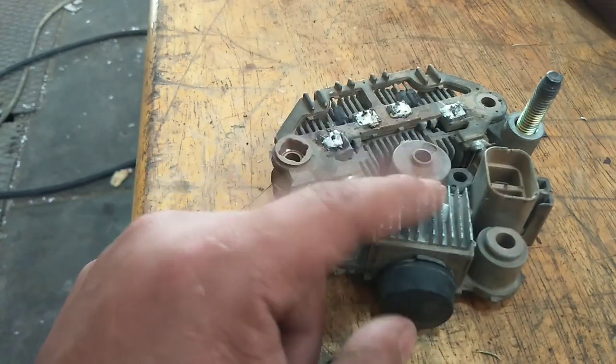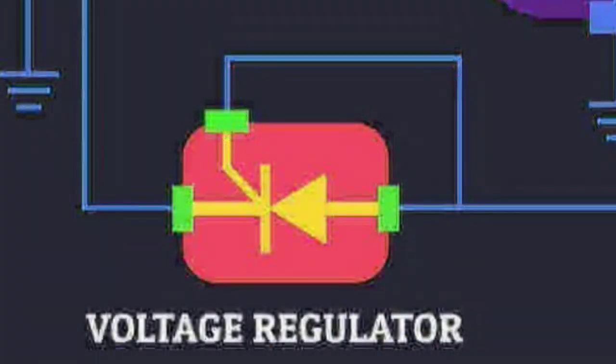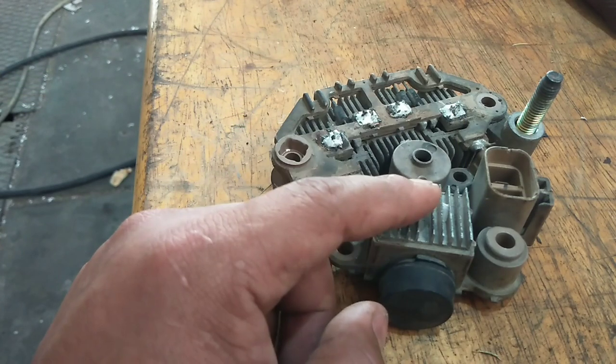This IC voltage regulator is used to control field current through the rotor inside the alternator in order to control alternator output.